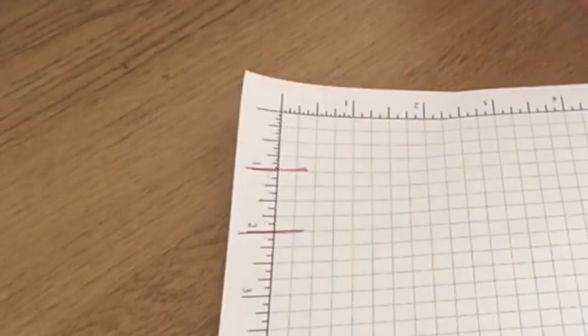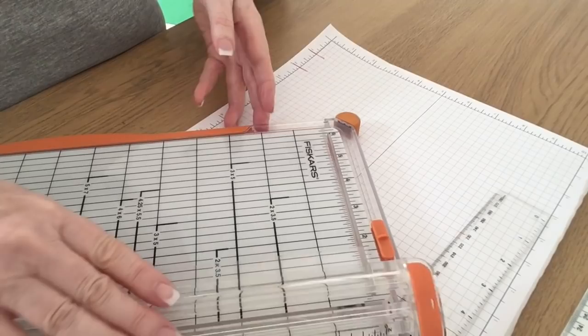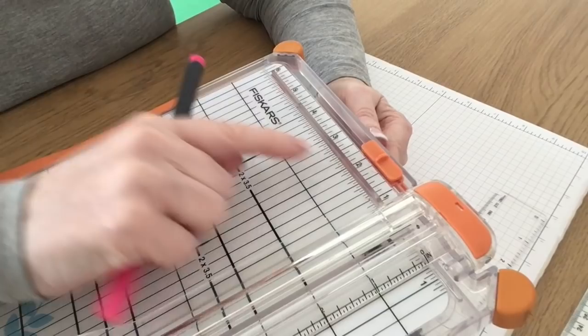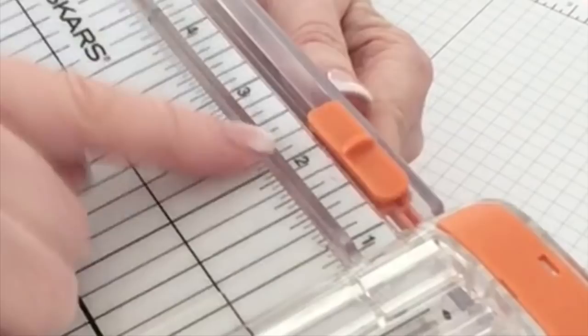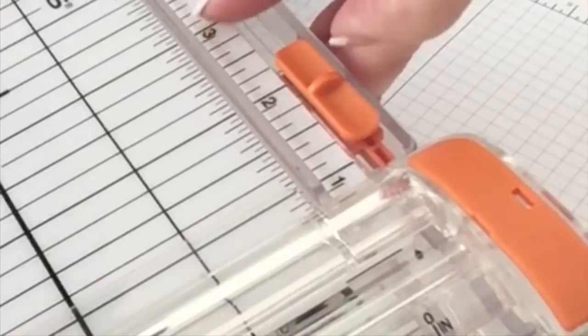Now I'm just going to bring my paper trimmer in and this is a Fiskars paper trimmer. Again I don't know how well you're going to see it but if you look between an inch mark, if I start at two inches I've got one two three four five six seven and the third inch is eight so again that's eighths.